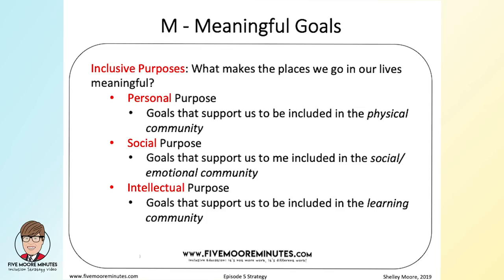There are three purposes that all of us have in every place we go — these are not specific to IEPs or disability at all — and we negotiate all three of them in every place we go. The first is personal purpose: goals or purposes that help us be successful and included in the physical space or community. This is connected to behavior, but never compliance — it's more about knowing what to do when you don't know what to do. For example, we know it's okay to throw basketballs in the gym, but how do kids know we can't throw books in a library?